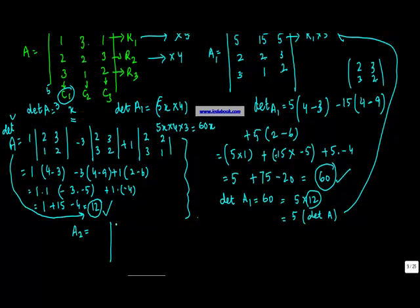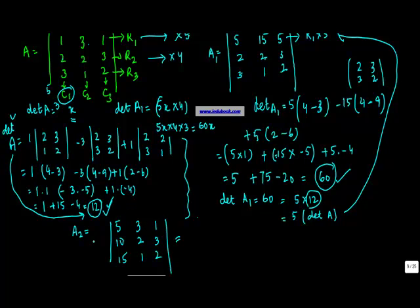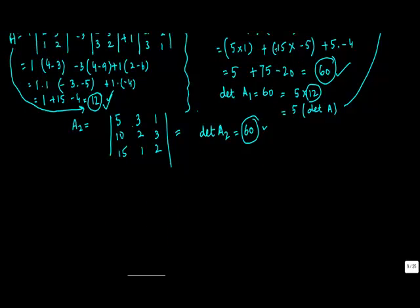So what do we get? We will get the new matrix as 5 into 1 equals 5, 5 into 2 equals 10, and 5 into 3 equals 15, then 3, 2, 1, 1, 3, 2. Now you know that the value of A is 12. So you should find out the value of determinant of A2, and that should be equal to 60, because here also we multiplied column 1 by 5. So ideally the value should be 60.